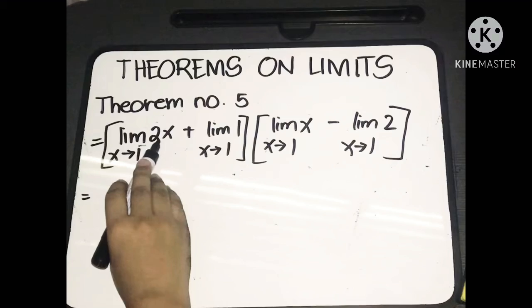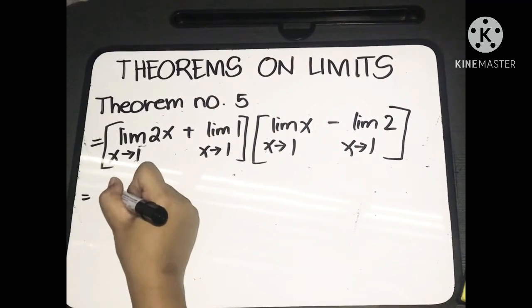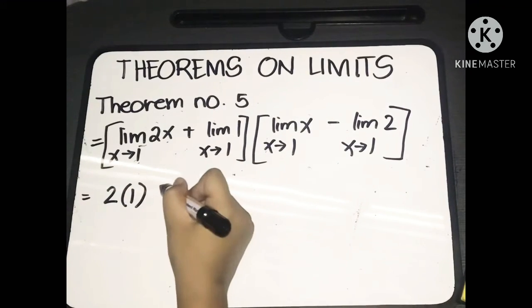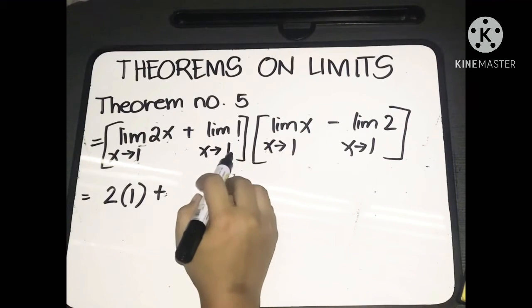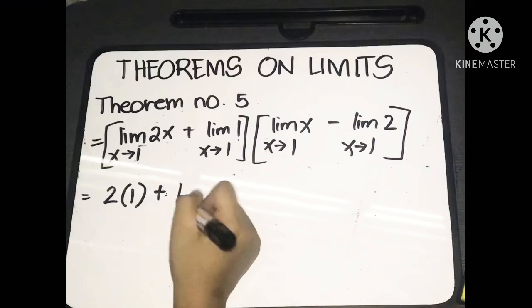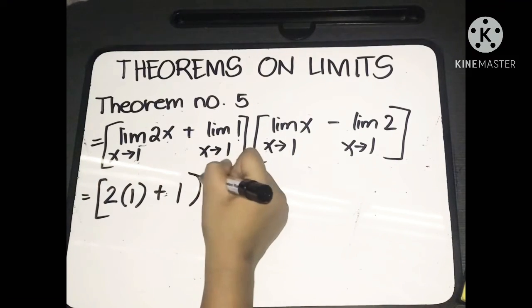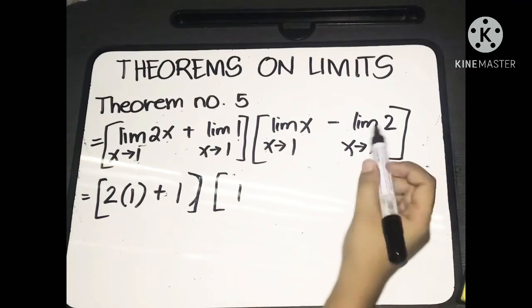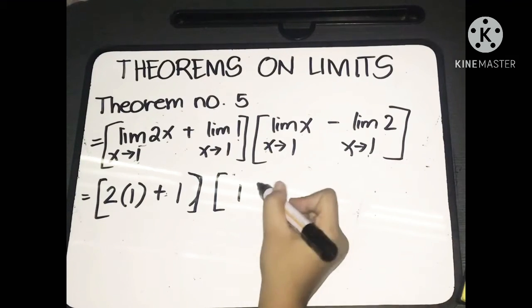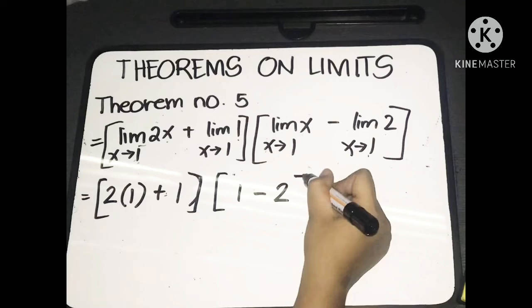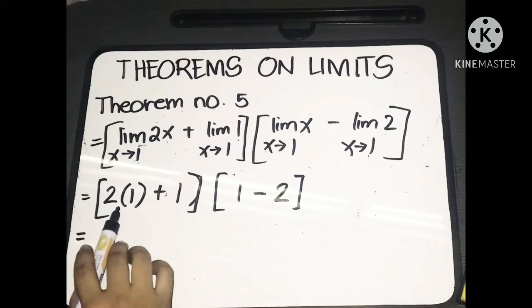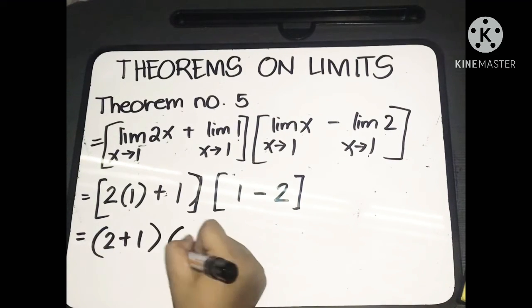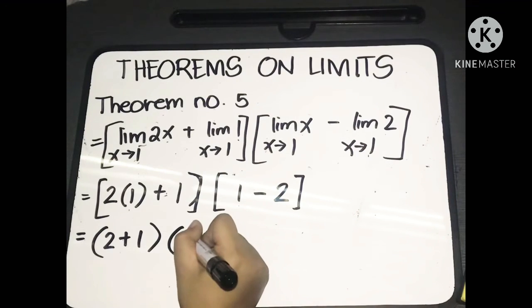Applying previous theorems: the limit of 2x as x approaches 1 — taking the constant outside gives 2 times the limit of x as x approaches 1, which equals 1. Plus the limit of 1 as x approaches 1; limit of a constant is the constant itself, so that's 1. Then multiplied by the limit of x as x approaches 1, which is 1, minus the limit of 2 as x approaches 1, which is 2.